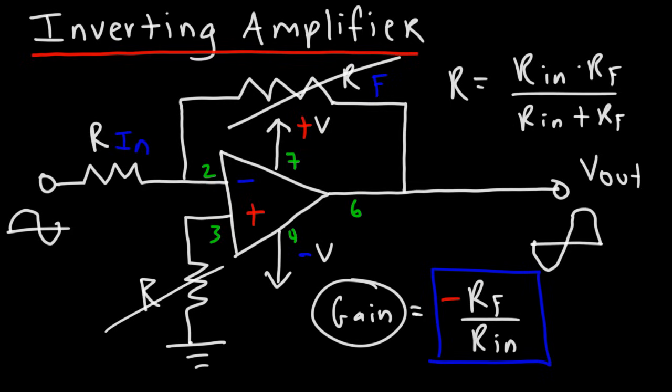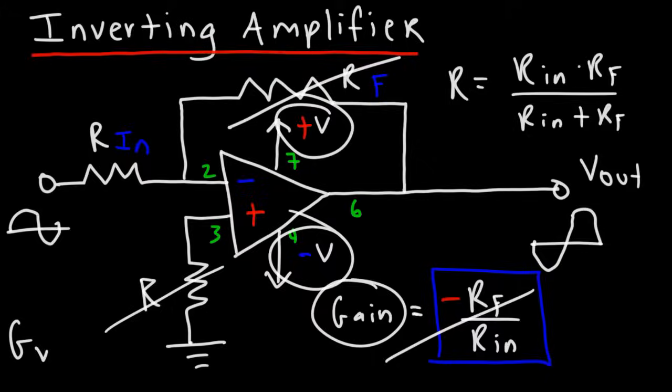So the gain will no longer be called the closed loop voltage gain. Instead it's going to be called the open loop voltage gain. And so that equation won't apply if we don't have a feedback resistor. Now the typical open loop voltage gain represented by GV could be as high as 200,000. Now the output voltage will be limited based on the supply voltages at pins 4 and 7. So keep that in mind.